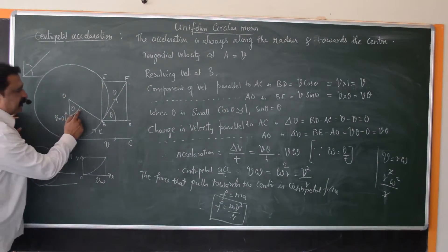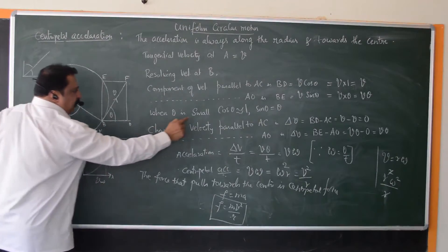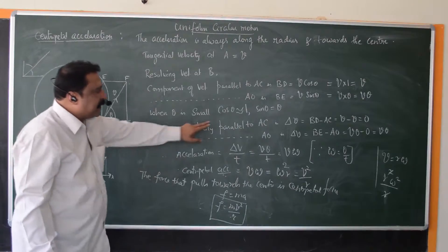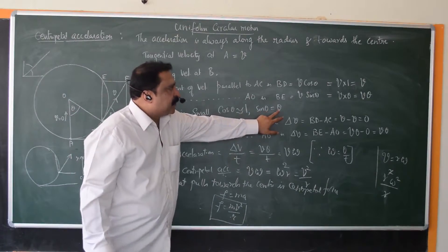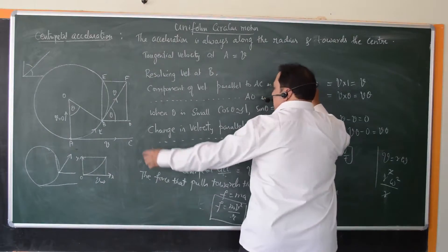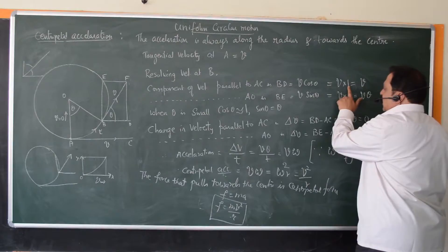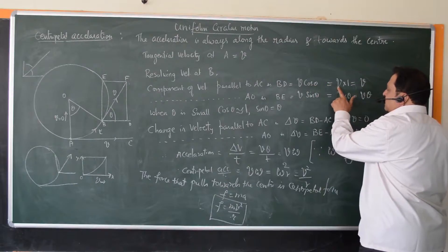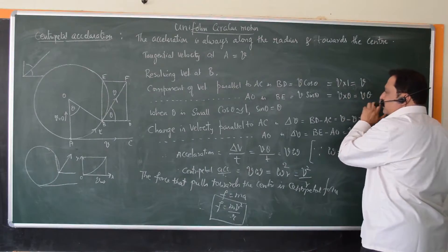Now if theta is very small, remember in mathematics, in trigonometry, if theta is very small, then the value of cos theta can be taken as 1, approximately 1, and sin theta is just theta. So approximating that theta is very small, V cos theta becomes V into 1, that is V, and V sin theta becomes V into theta, that is just V theta.